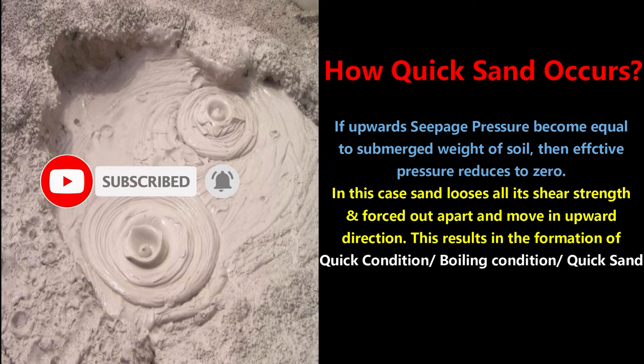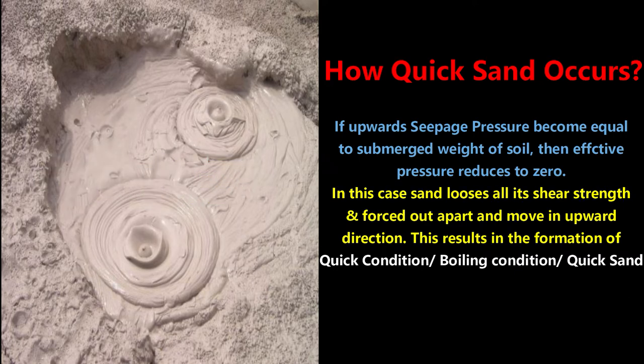Effective pressure is also called intergranular pressure. In this case, sand loses all its shear strength and sand particles are forced apart and move in the upward direction. This results in the formation of a quick condition, or boiling condition, also called the quicksand condition. The quicksand condition occurs mainly in fine sand conditions.